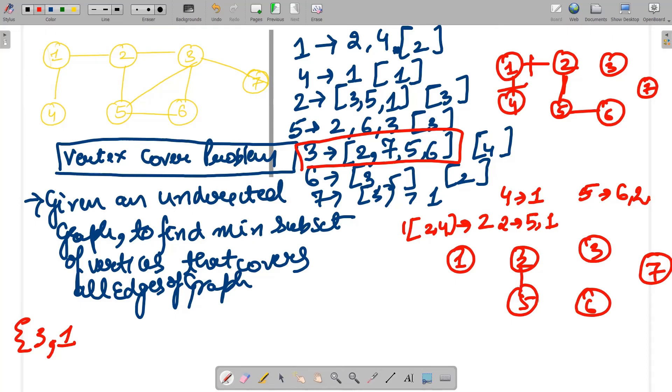So if we have taken 1, so we are left with this and this edge and what we can choose is obviously because 5 is connected to 2 now, so we can choose 5. So this is a minimum subset if we choose 5, even these edges are also taken out. So this is a minimum subset of vertices which is covering all the edges of the graph, hence this is known as vertex cover problem, right?